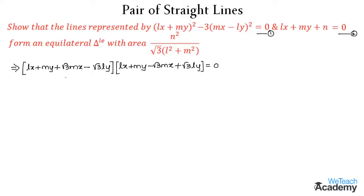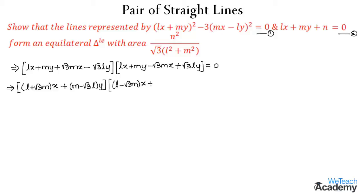From this, taking the coefficient of X as (L + √3·M), and taking Y as a common factor, we get (M − √3·L)X + (M + √3·L)Y = 0. So this gives us one straight line, which we name equation 3, and another straight line from the pair, which we name equation 4.